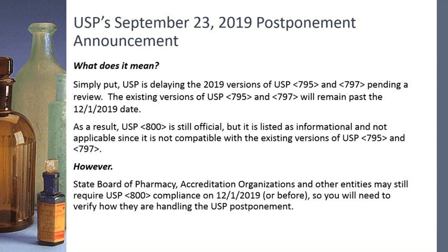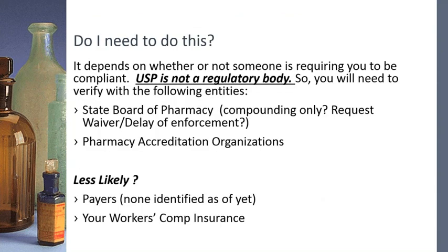In June 2019, USP issued new standards for 795 and 797, but those had issues with beyond-use dating and other areas. USP received many questions, concerns, and an appeal, so on September 23rd they postponed the new versions of 795 and 797 for internal review. Importantly, the delay of 795 and 797 does not necessarily mean USP 800 is delayed.